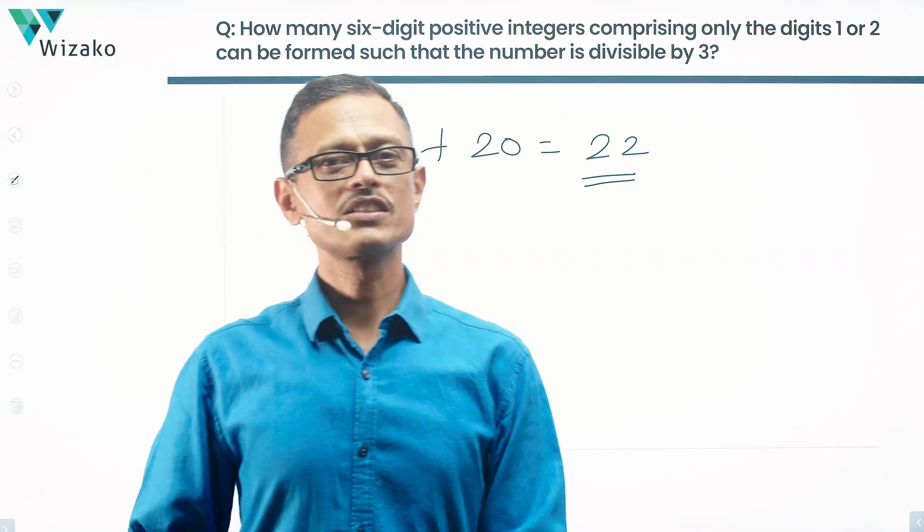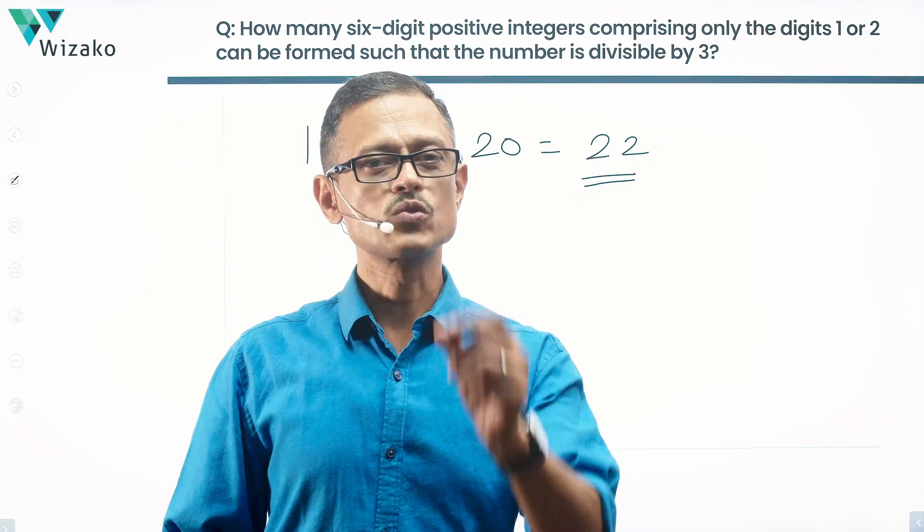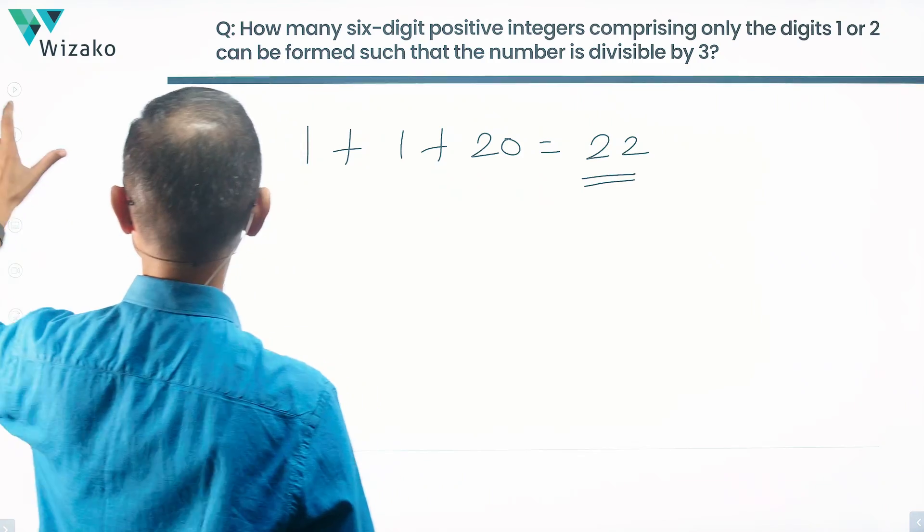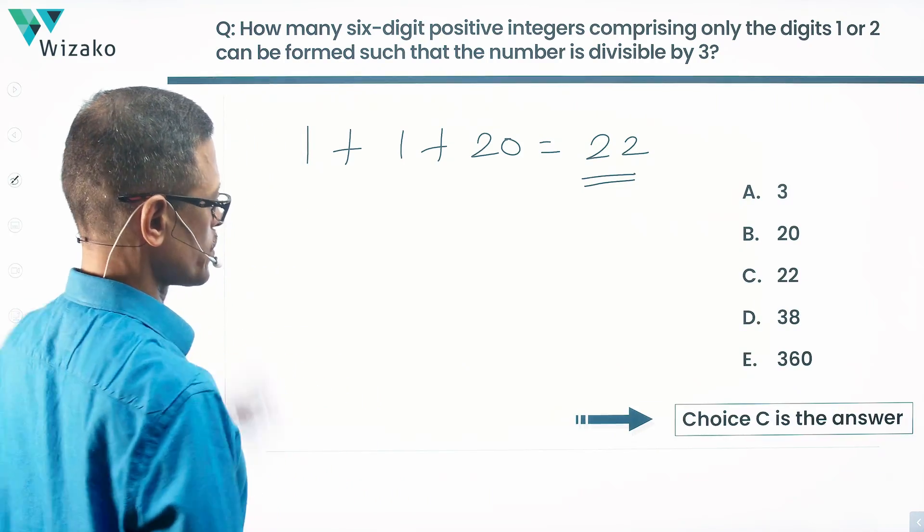So 22 six-digit numbers can be formed using the digits 1 or 2 such that the number is divisible by 3. Choice C is the correct answer to this question.